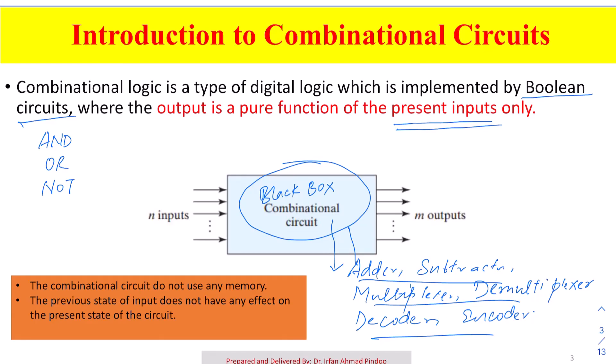The relation is that if we are having n number of inputs, then n number of inputs may have m number of outputs. We will be defining the relation of how n and m are related. First point: combinational logic circuits are made of logic gates — AND, OR, NOT, and other logic gates. Second point: output is a pure function of present inputs only.